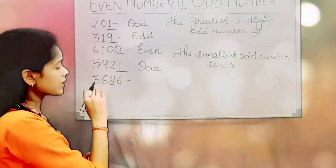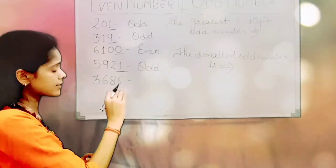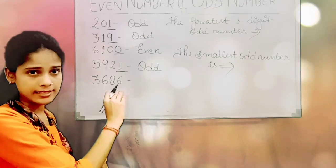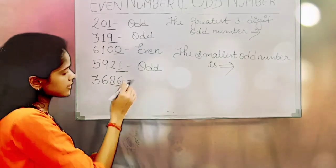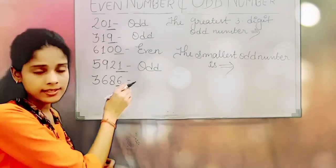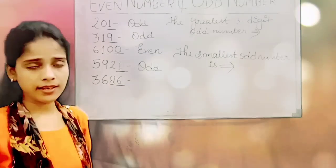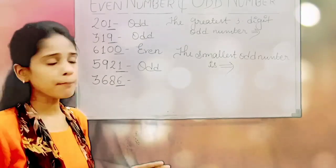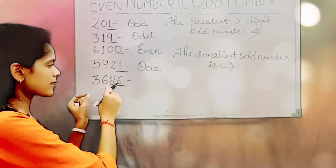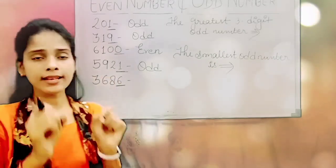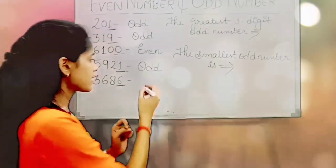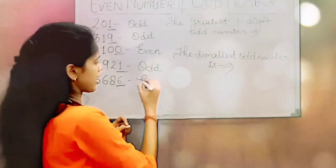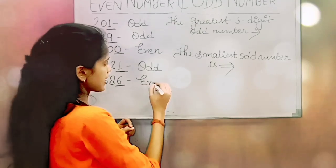The last one is three thousand six hundred and eighty-six. At the ones place there is six, and six is even number. So three thousand six hundred and eighty-six is even number.